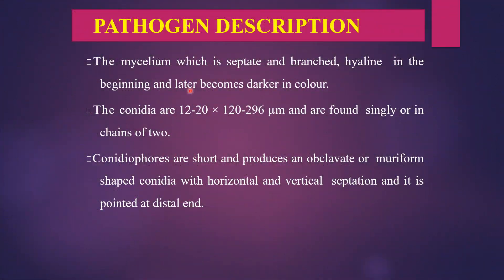Regarding pathogen description: the mycelium is septate and branched, hyaline in the beginning and later becomes darker in color. The conidia are 12–20 × 120–296 micrometers and are formed singly or in chains of two. The conidia are short and produce an obclavate or muriform-shaped conidia with horizontal and vertical septation, pointed at the distal end.